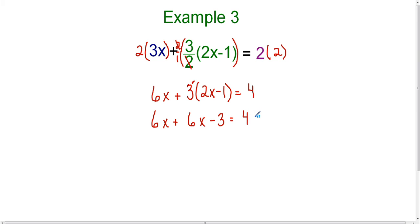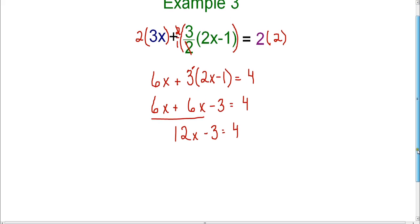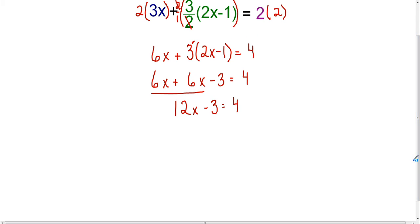Now I have no parentheses, so I can go ahead and combine like terms. So 6x plus 6x is 12x, and then I have minus 3 equals 4. And now I'm down to a two-step equation. Now I can begin solving for x.